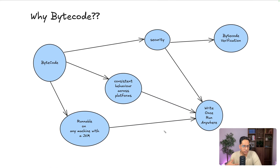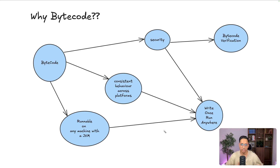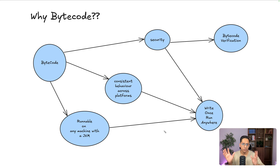Why is it called bytecode? Because every instruction is represented using a single byte. And why use bytecode? Because it is runnable on any machine with a JVM. If you have a JVM for a specific hardware and operating system, you can run your bytecode on that machine. It really opens up a lot of platforms — you don't have to think about what exactly the hardware or OS will be when you write code; you can code in a consistent manner and expect consistent behavior across platforms.